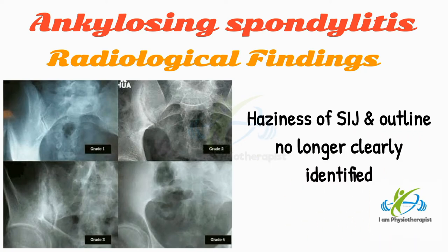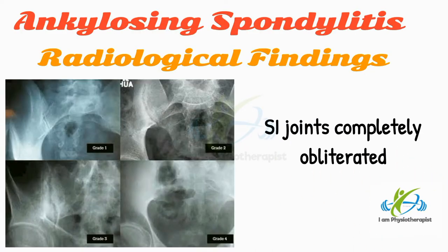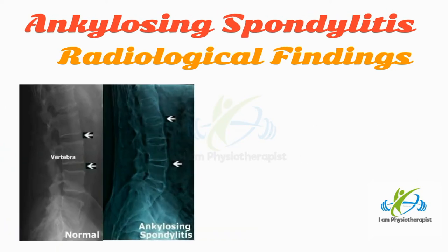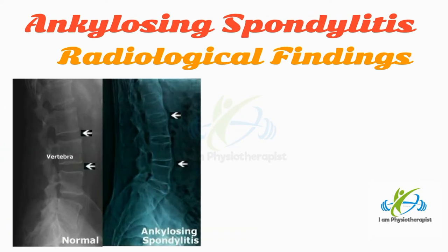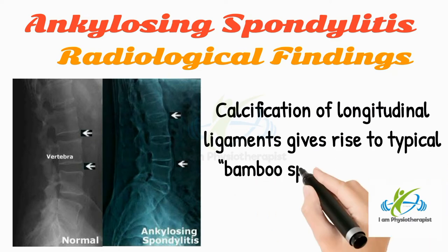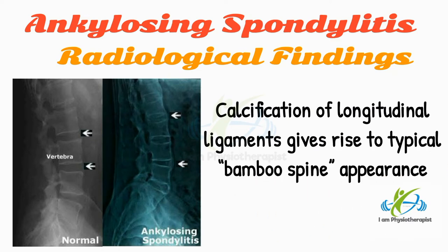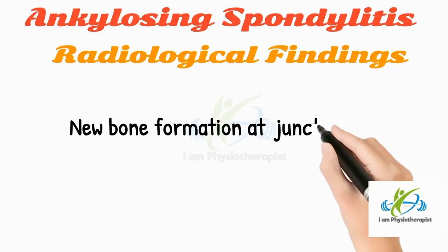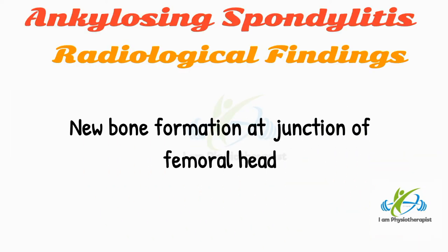Radiological findings: Early in the disease there is haziness of both sacroiliac joints and the outline is no longer clearly identified. Later, the sacroiliac joints are completely obliterated. Vertical calcification of the longitudinal ligaments gives rise to the typical bamboo spine appearance, and new bone formation occurs at the junction of the femoral head.